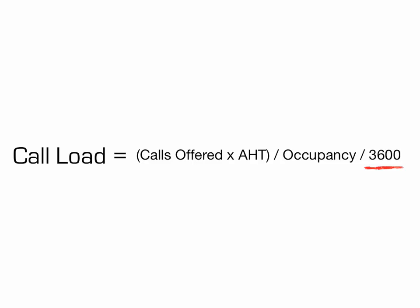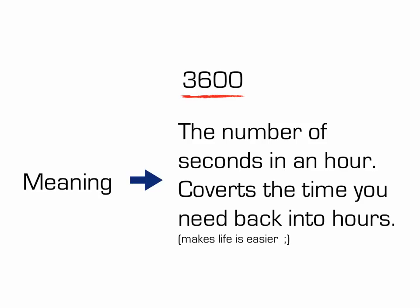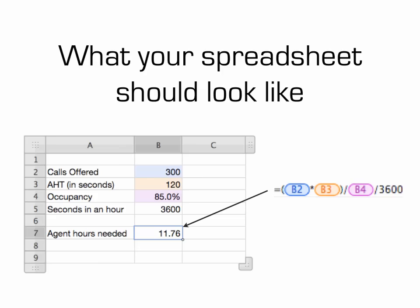And then 3,600 — you're probably wondering what that is. That's the number of seconds in an hour. When you divide the calculation by 3,600, it converts all the seconds of required logged-in time back into hours. That way you can tell your management or staffing team, 'I need 15 hours per day for this queue.' It just makes it a little bit easier.